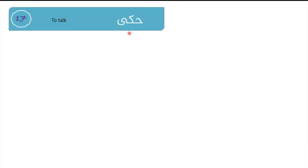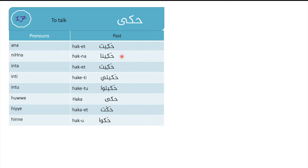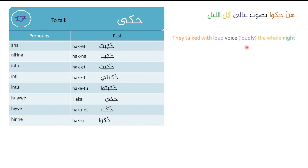Our second verb is حكى (haqa), meaning to talk or speak. Haqa is a final-weak verb in Arabic. Conjugation: ana haqeit, nihna haqeina, inta haqeit, inti haqeiti, intu haqeitu, houwe haqa, hiya haqat, hinne haqu. Notice with first and second person the final alif is replaced with a yaa, and with third person he it returns, but gets deleted for she and they.